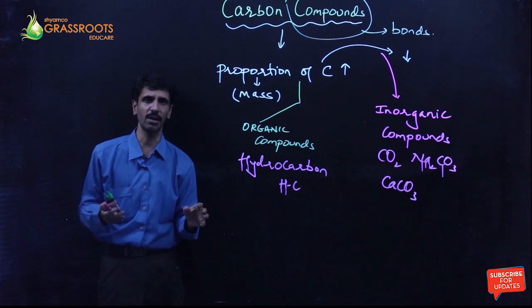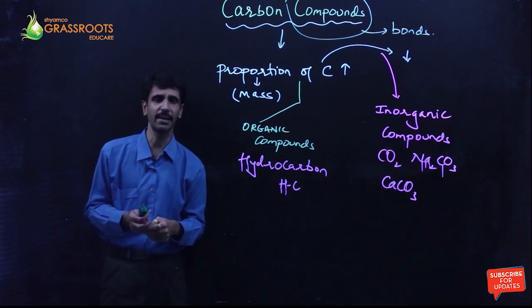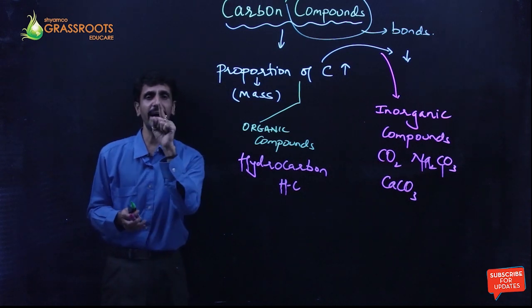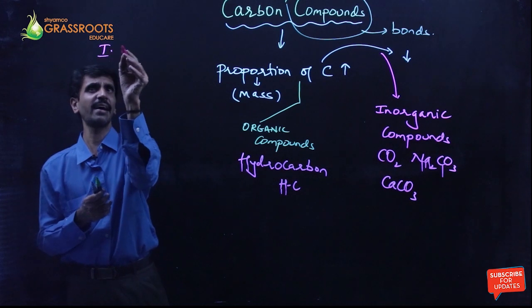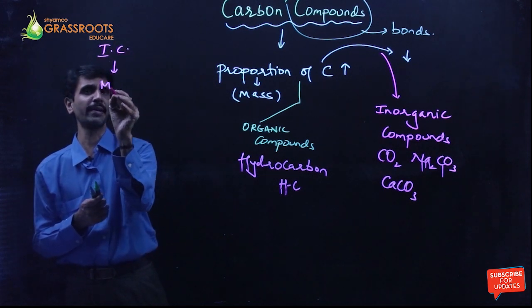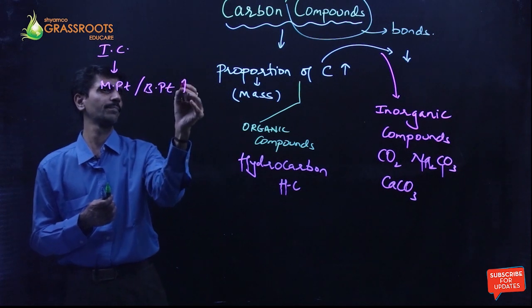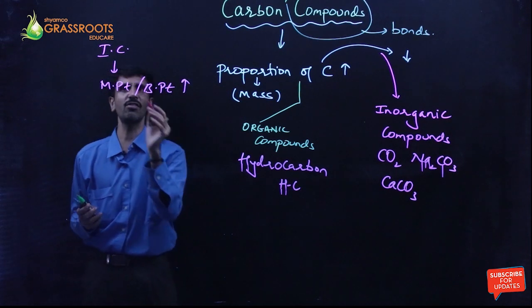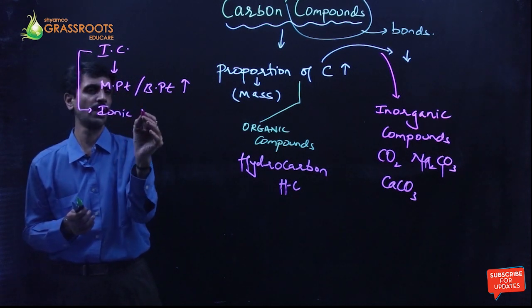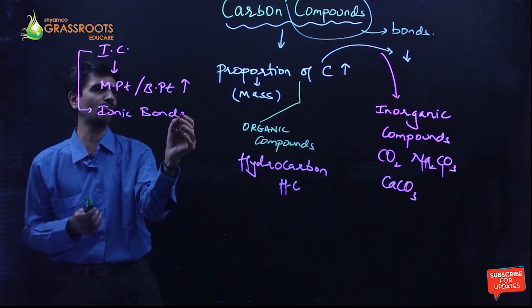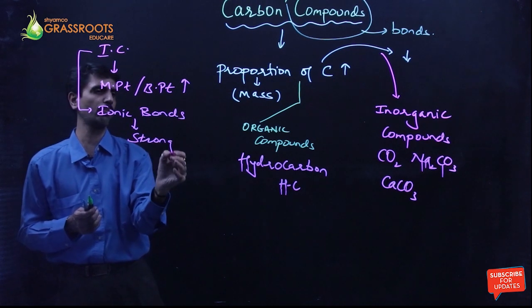Now in the previous chapter which was being discussed under metallurgy, we talked about ionic compounds as well. There I told you that ionic compounds, their melting point and boiling point is going to be very high. The properties of these ionic compounds were being expressed in terms of ionic bonds. And the ionic bonds are very strong and therefore the melting point and boiling point is going to be high.